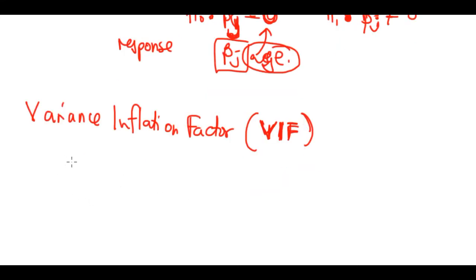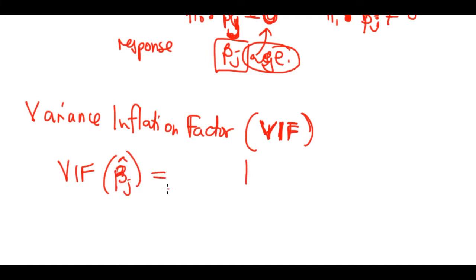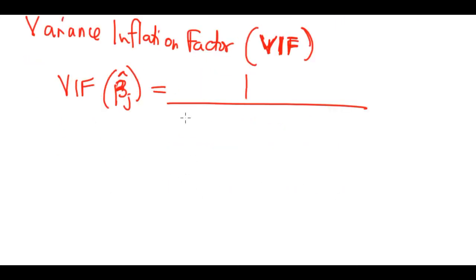The VIF is defined as the ratio of the variance of beta-j when fitting the full model, divided by the variance of beta-j if fit on its own. The formula is: VIF(beta-j-hat) = 1 divided by (1 minus R-squared of x-j regressed on x-minus-j).